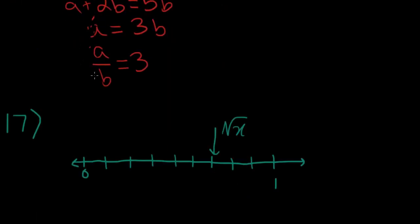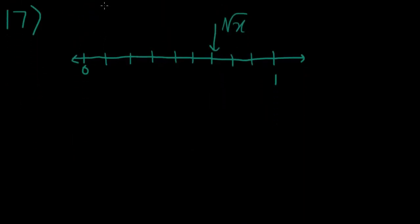Now, number 17 is this number line that we don't usually see in the SAT book. And, it says on the number line above, there are 9 equal intervals between 0 and 1. What is the value of x? So, there are 9 equal intervals between 0 and 1. So, 1, 2, 3, 4, 5, 6, 7, 8, and then 1.